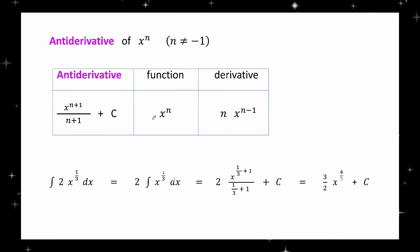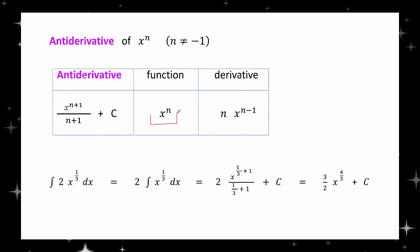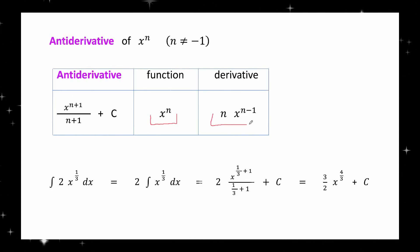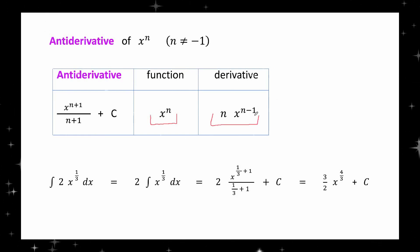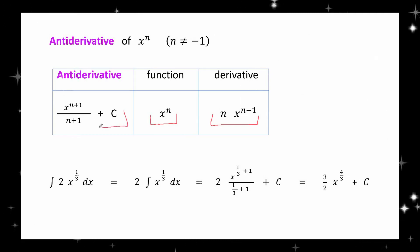This table shows the derivative and antiderivative of the function x to the n, where n is not negative 1. Note that the formula on the right is the power rule. An analog of the power rule for integration is shown on the left.